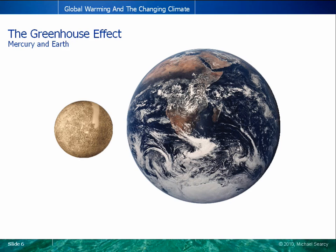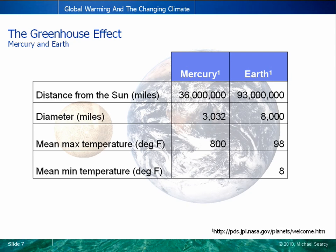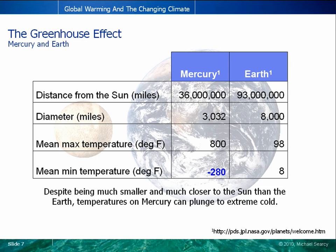So let's take a closer look at these two planets. Mercury is over 2.5 times closer to the sun than the Earth, and is over 2.5 times smaller than the Earth in diameter. As the planet closest to the sun, the average maximum temperature on Mercury reaches a scorching 800 degrees Fahrenheit. However, with no notable atmosphere and greenhouse effect to moderate its climate, the average minimum temperature on Mercury can plummet to negative 280 degrees Fahrenheit — more than a 1,000 degree temperature swing, and much colder than any place on Earth.